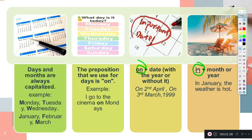Both prepositions work with months of the year and with dates. Remember that 'in' is the most general, and 'on' is for more specific dates. 'In' is so general that it covers years, decades, centuries, etc., while 'on' is for more specific dates such as a particular day or a specific date. We work with these two prepositions in the following way.